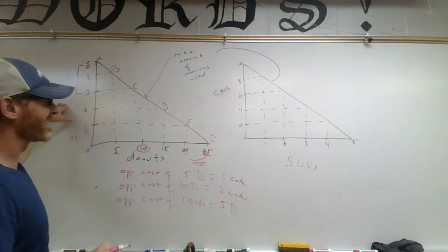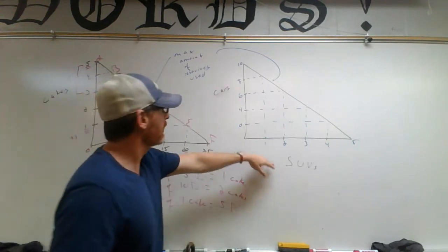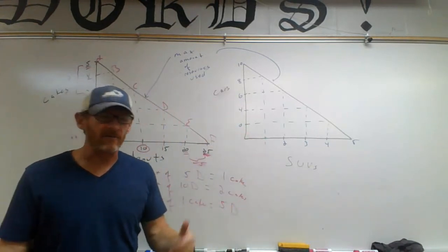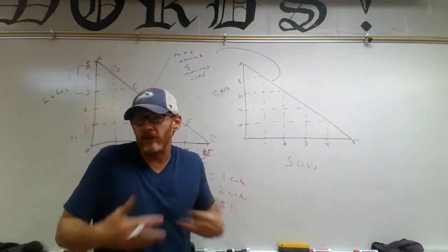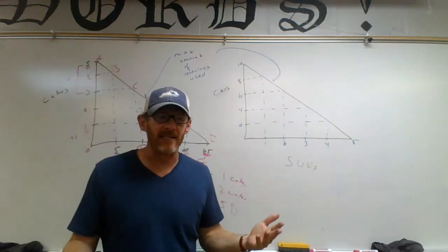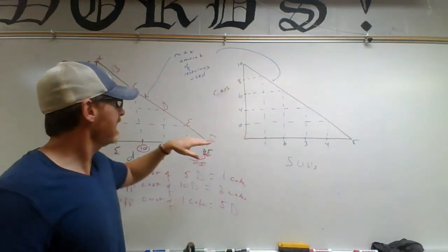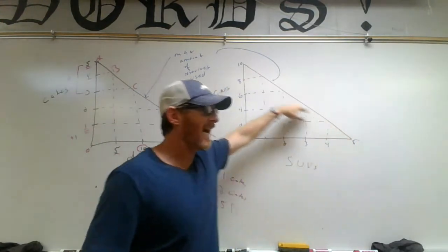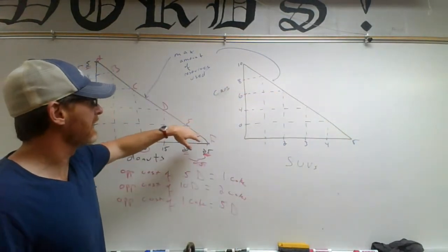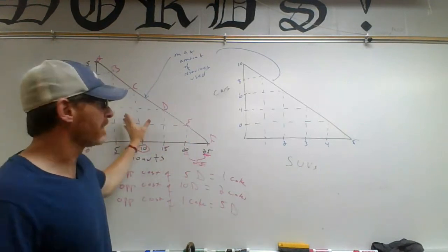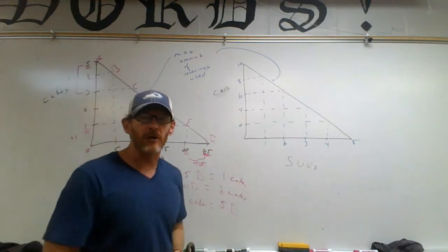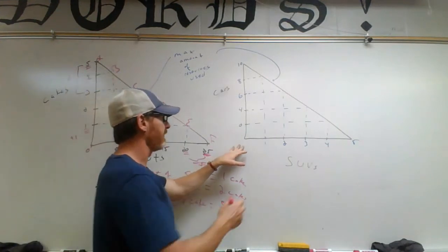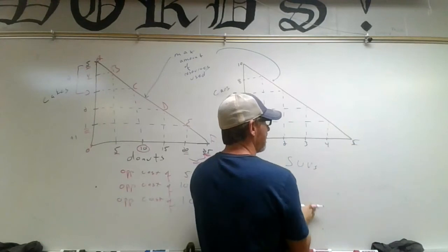Now we'll look at another example with cars and SUVs. Donuts and cakes use the same resources, and cars and SUVs use the same resources — the same manufacturing process and the same inputs. Because these things use similar or very similar resources, we have what's called a straight-line opportunity cost graph, or a straight-line production possibilities curve. In the future we'll learn about increasing costs where the two resources are different, but for now the resources are very similar.